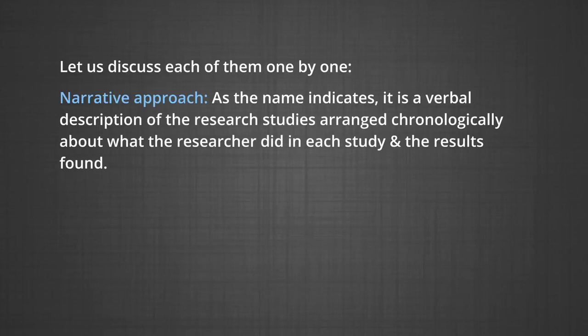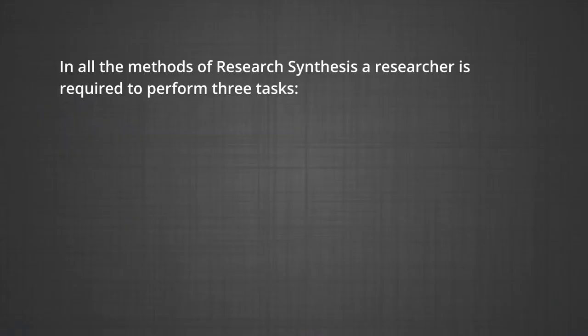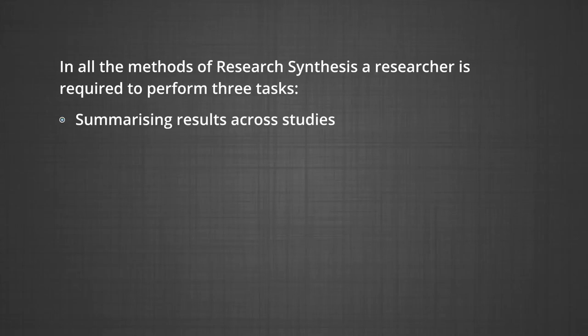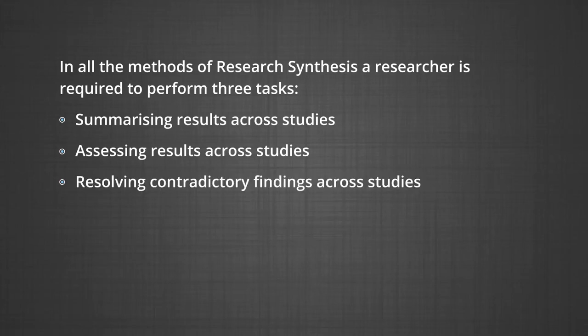The first method is the narrative approach. As the name indicates, it is a verbal description of the research studies arranged chronologically about what the researcher did in each study and the results found. It is more suitable when the number of studies on a topic is small. It provides richness of detail about study characteristics, allows researchers to trace the evolution of thought because of its chronological nature, and can be used to synthesize two or more different lines of research. In all methods of research synthesis, a researcher is required to perform three tasks: summarizing results across studies, assessing results across studies, and resolving contradictory findings across studies.